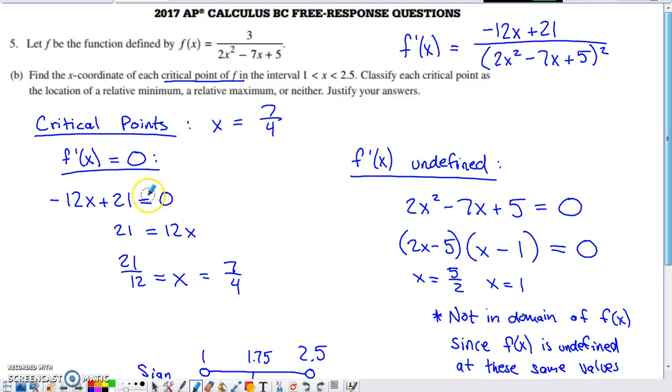So to find where the derivative is equal to 0, well, this fraction is only ever going to equal 0. And I just took this right out of part A. But this fraction is only ever going to equal 0 whenever the numerator is equal to 0. So when you set that numerator equal to 0 and solve for x, you end up with 7 fourths.